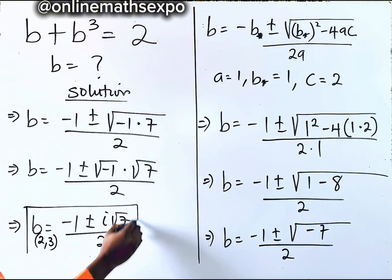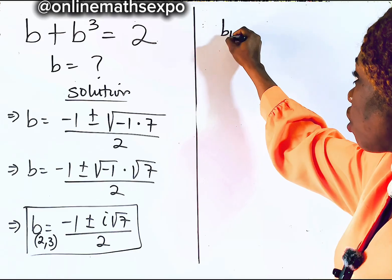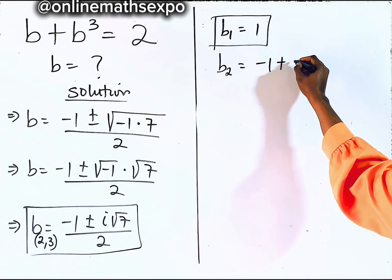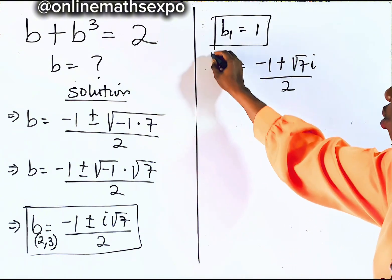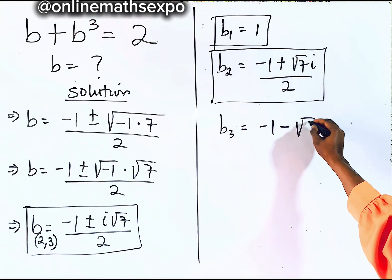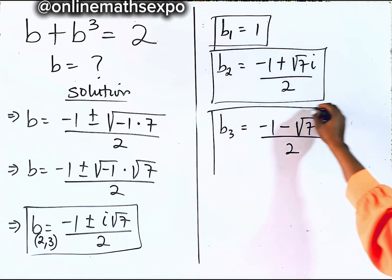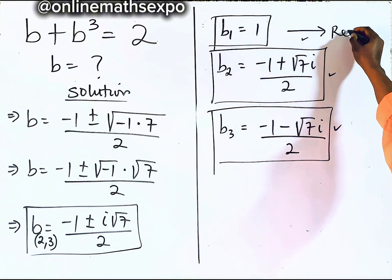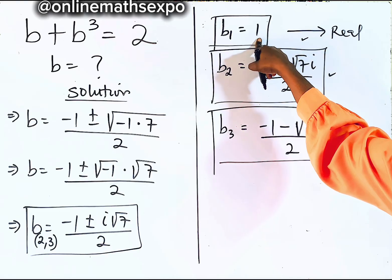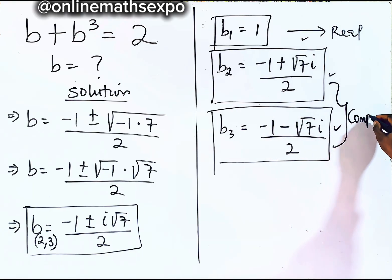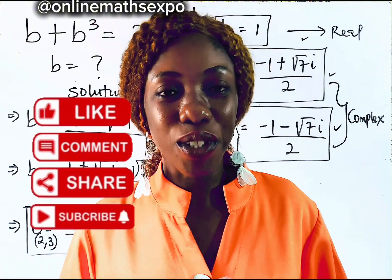Gathering all values of b: the first value is b = 1, the second value is b = (−1 + i√7) / 2, and the third value is b = (−1 − i√7) / 2. The first is the real solution found on the number line; the latter two are complex solutions containing both real and imaginary parts.